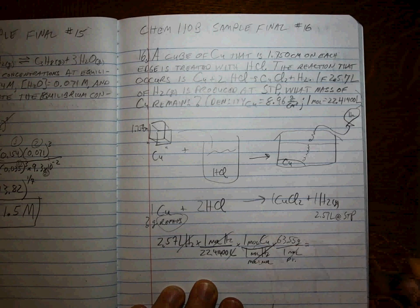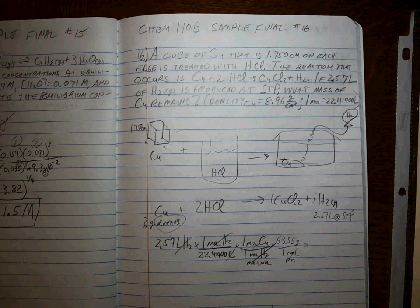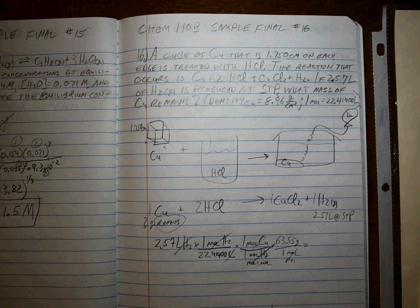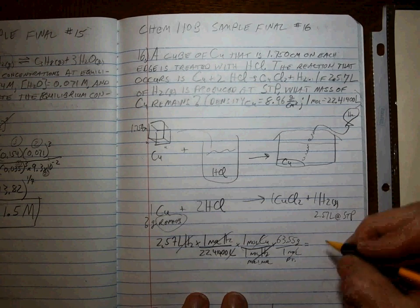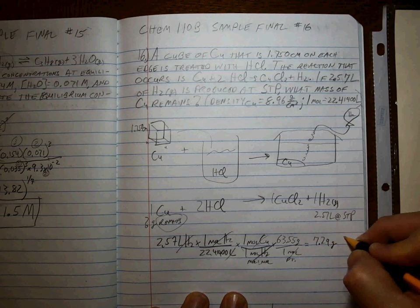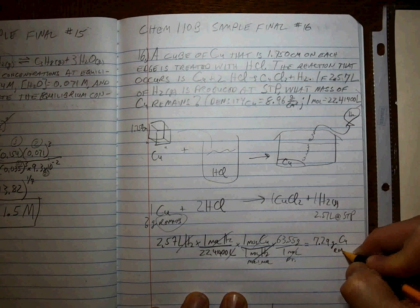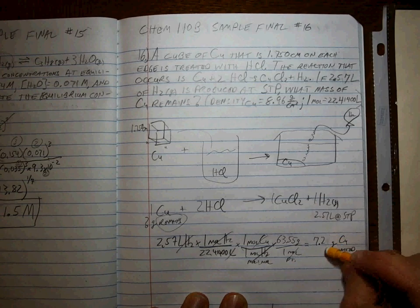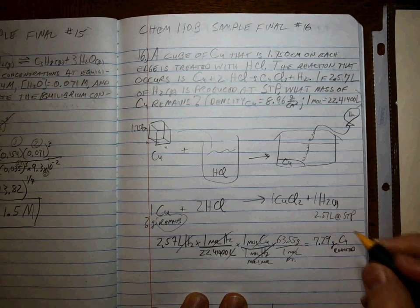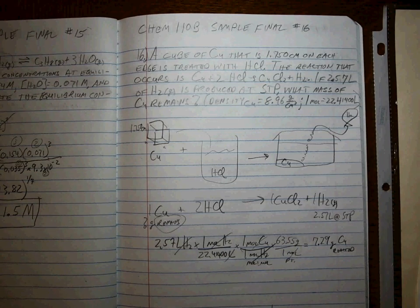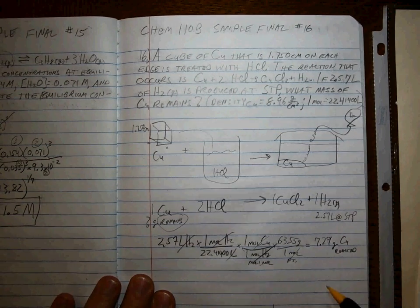And whenever we calculate that up, we get a value. What is that value? That's 7.29 grams of copper that reacted. But I don't want to know how much reacted. I want to know how much is left. Well, if you know you used up this much, and you want to know how much is left, you have to figure out how much you started with. How do you get that?